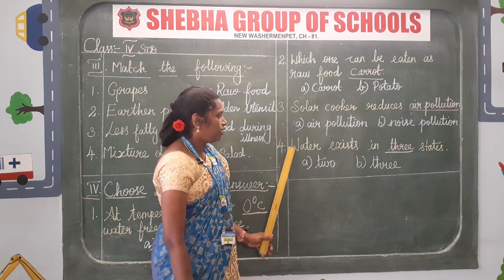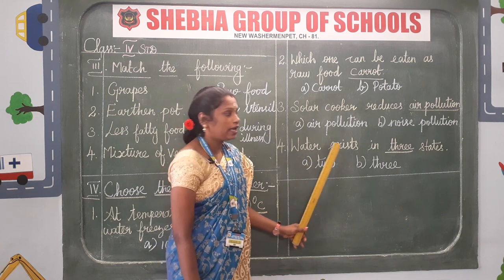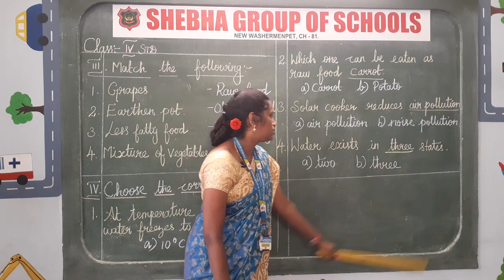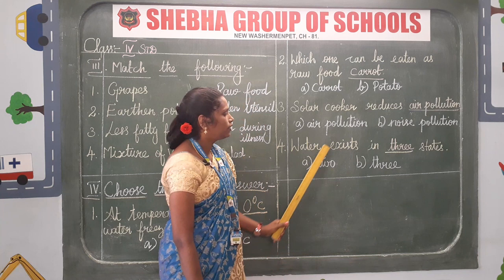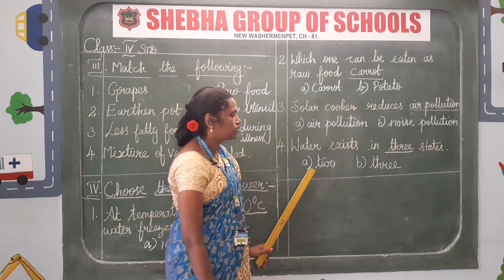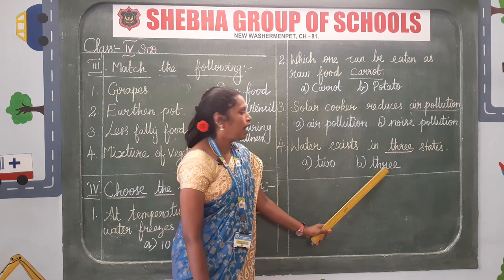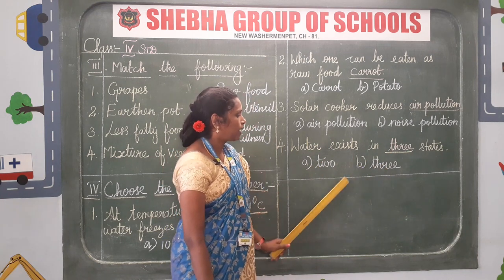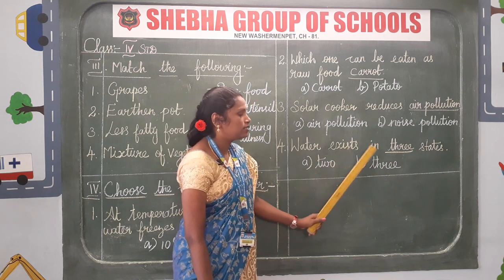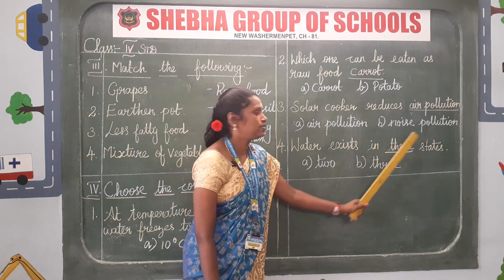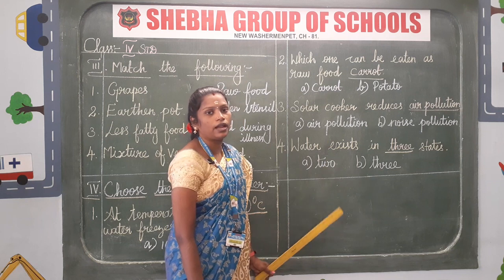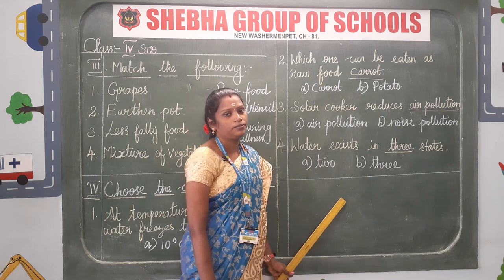Leave a line. Fourth one: water exists in blank states. The options are 2 and 3. The correct answer is 3 states. Water exists in 3 states. After finishing, draw a line using scale and pencil.